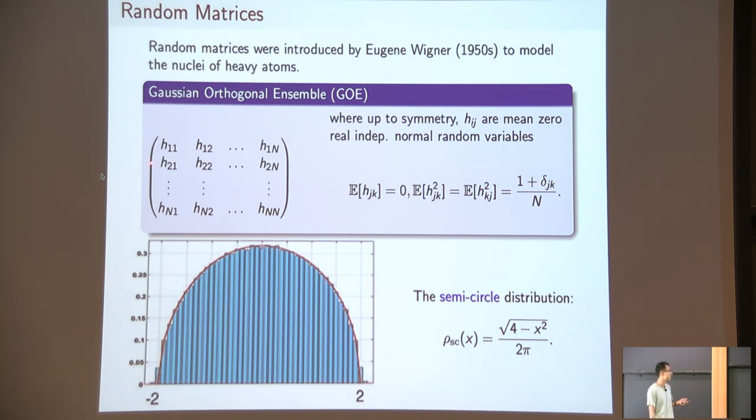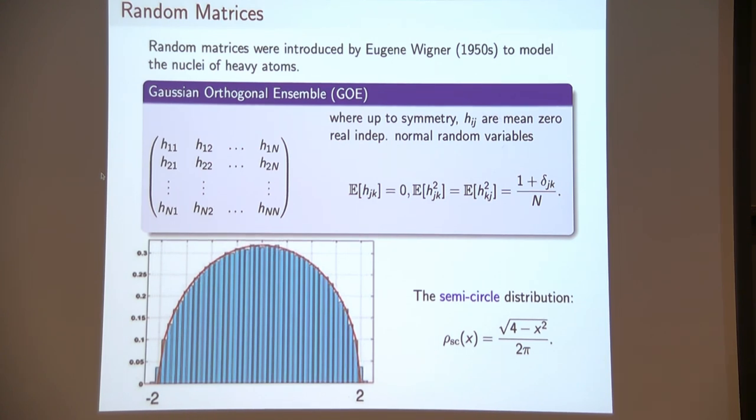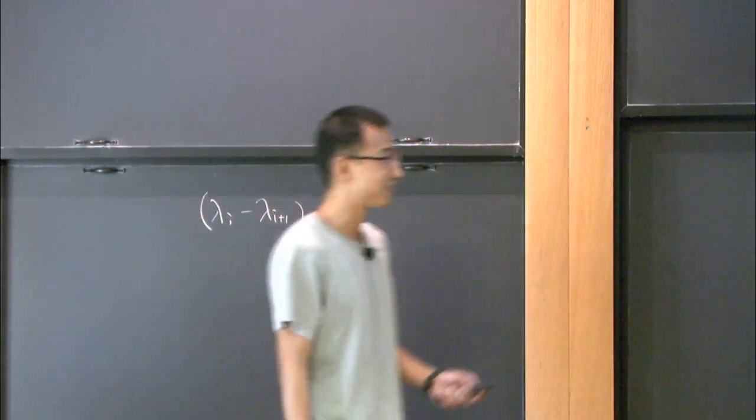The quantity Wigner is interested in is the energy gaps, energy spacings, the gaps between two adjacent energy levels of nucleus of a heavy atom. More precisely, if we take out two eigenvalues in the bulk of the spectra, far away from those two endpoints from minus two to two, lambda i and lambda i plus one, and compute this gap.